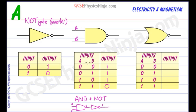So that is called a NAND gate, or a NOT AND.